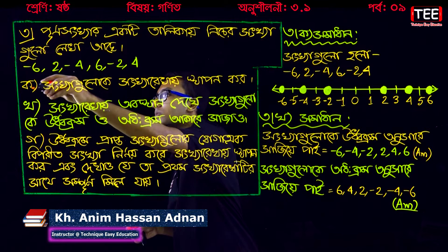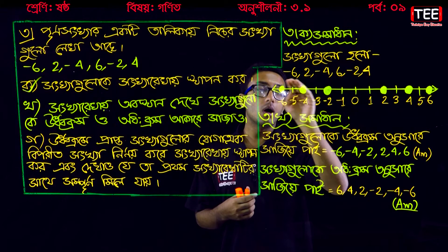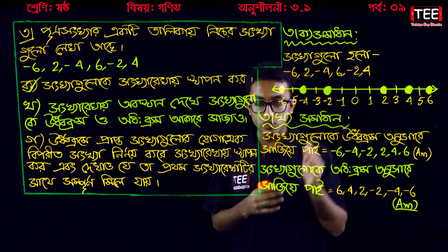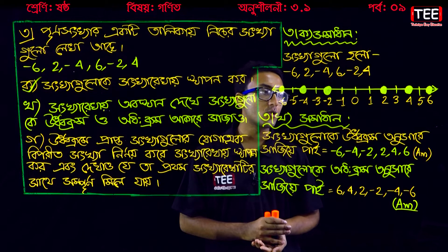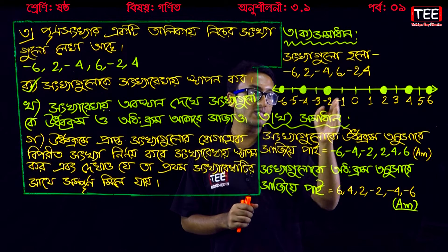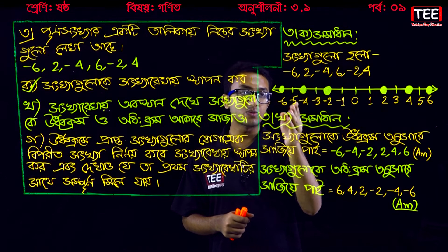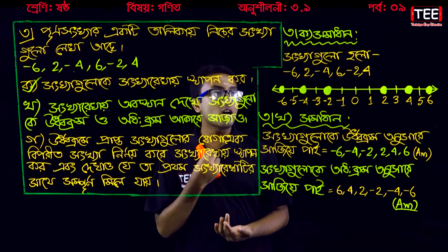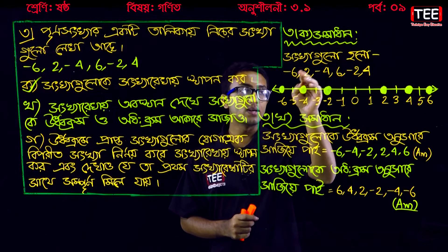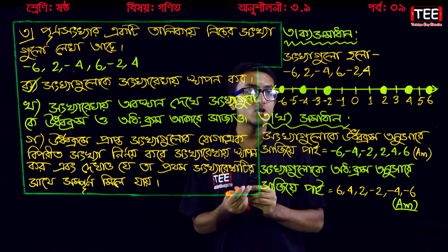Now we will write minus 6, 2, minus 4, 6, minus 2, 4. Now we will write minus 0, then we will write minus 1, minus 2, minus 3, minus 4, minus 5, minus 6. Now we will write minus 6.